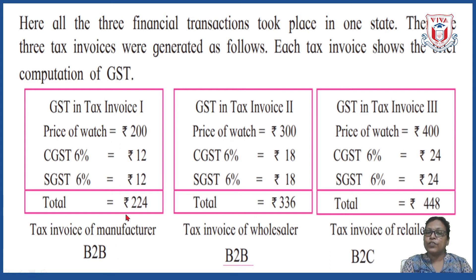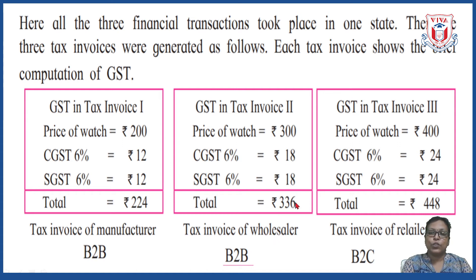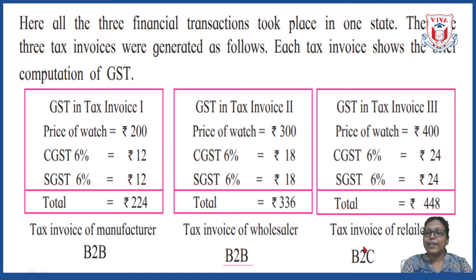For the wholesaler (also B2B): price of the watch is 300, CGST paid is rupees 18, SGST paid is rupees 18, and total cost is rupees 336. The third invoice is prepared by the retailer for the customer: price of watch is rupees 400, CGST is 24, SGST is 24, and total is 448. This invoice is called B2C — business to consumer.